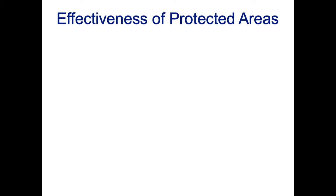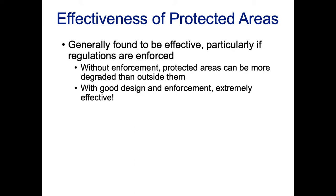When we make protected areas we want to make sure they're as effective as possible. We're setting aside land that cannot be used for most economic purposes and cannot be developed, so we want to design and manage them as effectively as possible and put them in places that will best meet our conservation objectives. Generally, protected areas are found to be effective particularly if regulations are enforced. Without enforcement, protected areas can be more degraded than the areas outside of them. Good design and good enforcement make them extremely effective.